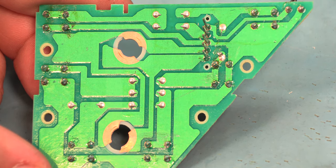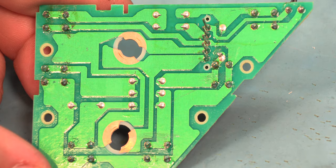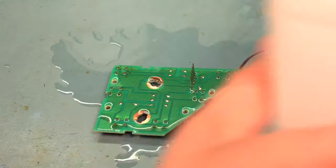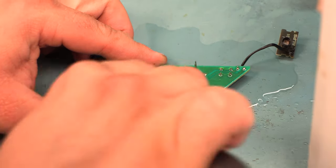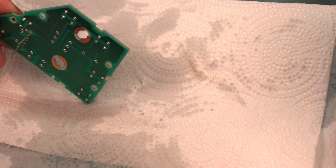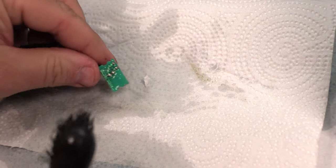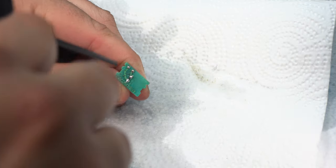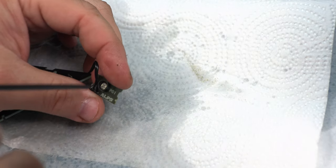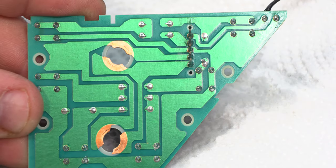And we're going to use some isopropyl alcohol and a nylon brush to take care of that. We'll apply a liberal coat of alcohol to the back side of the board. And we'll use some compressed air to dry off the board. We'll do the same thing with the photocell board. And here's what it looks like after the cleaning.